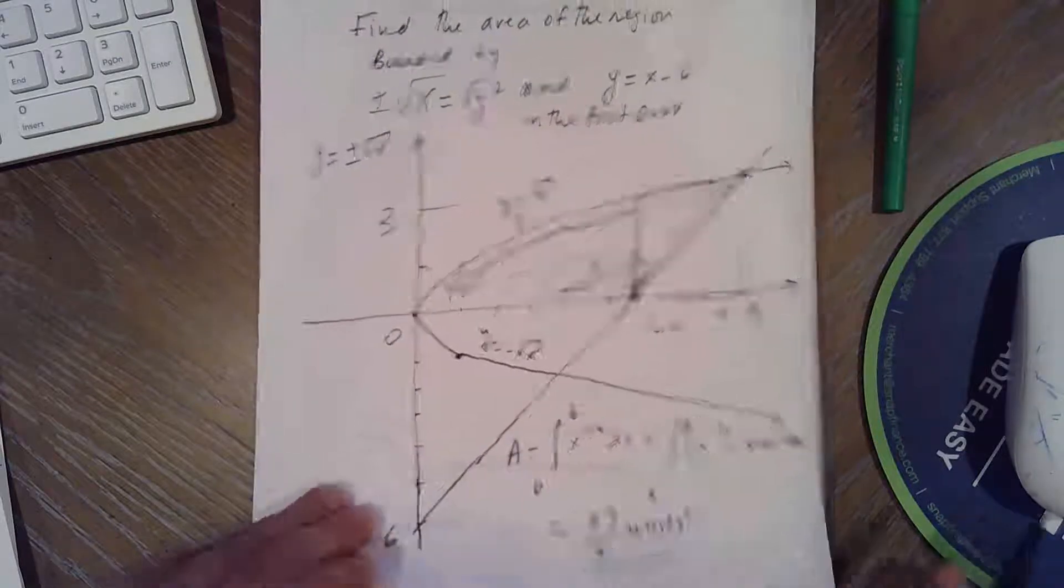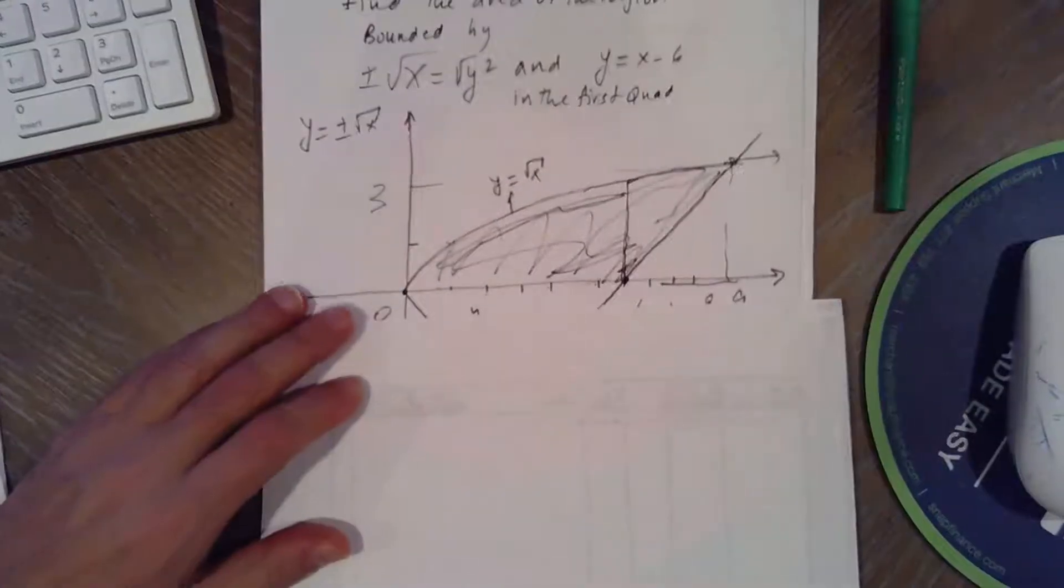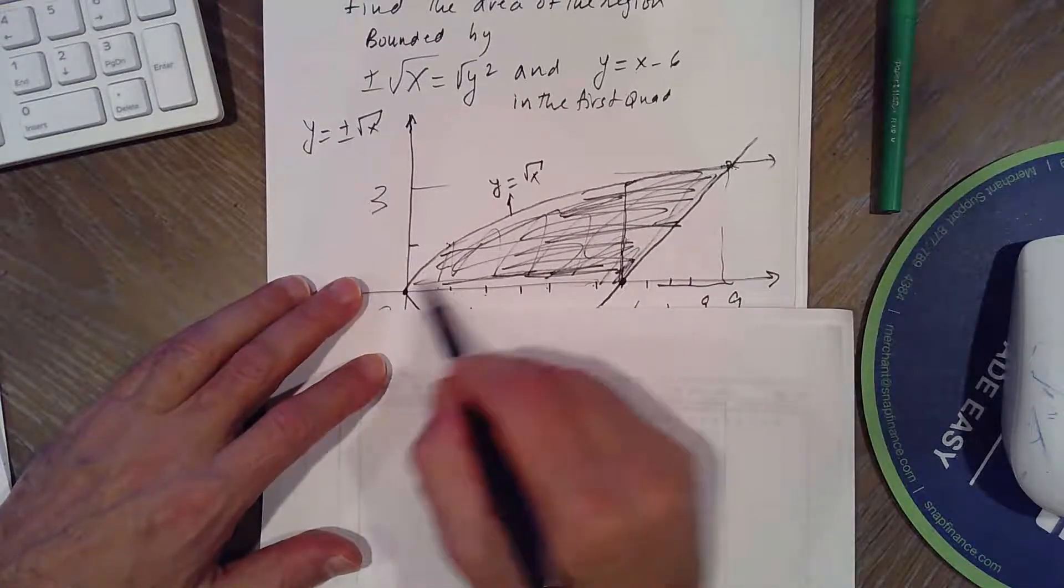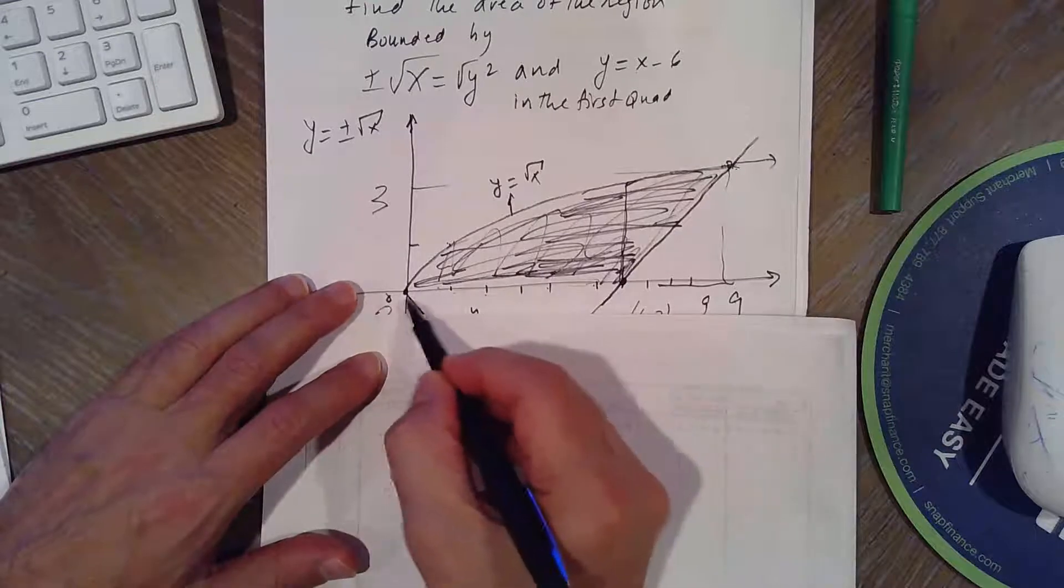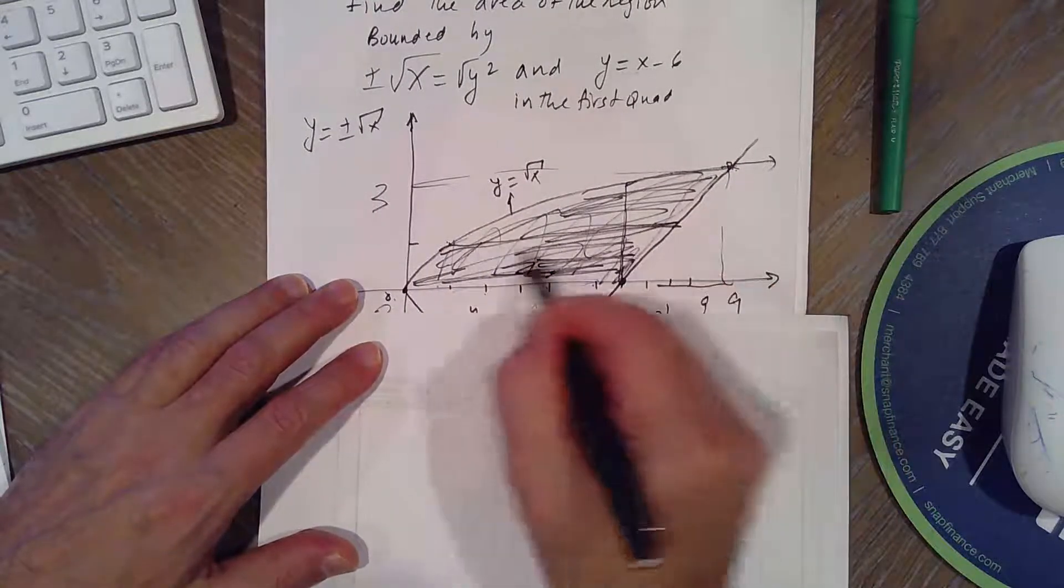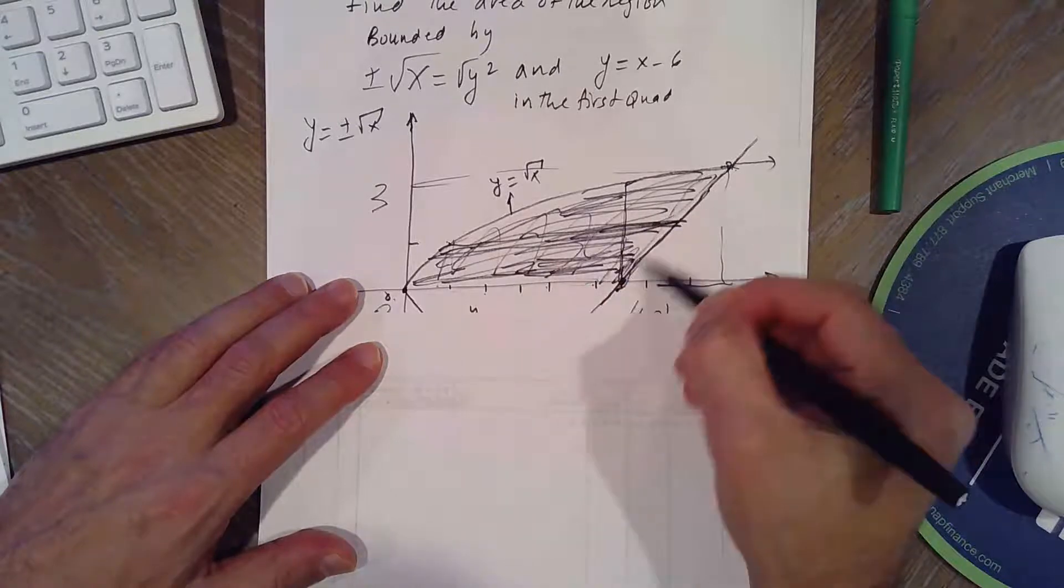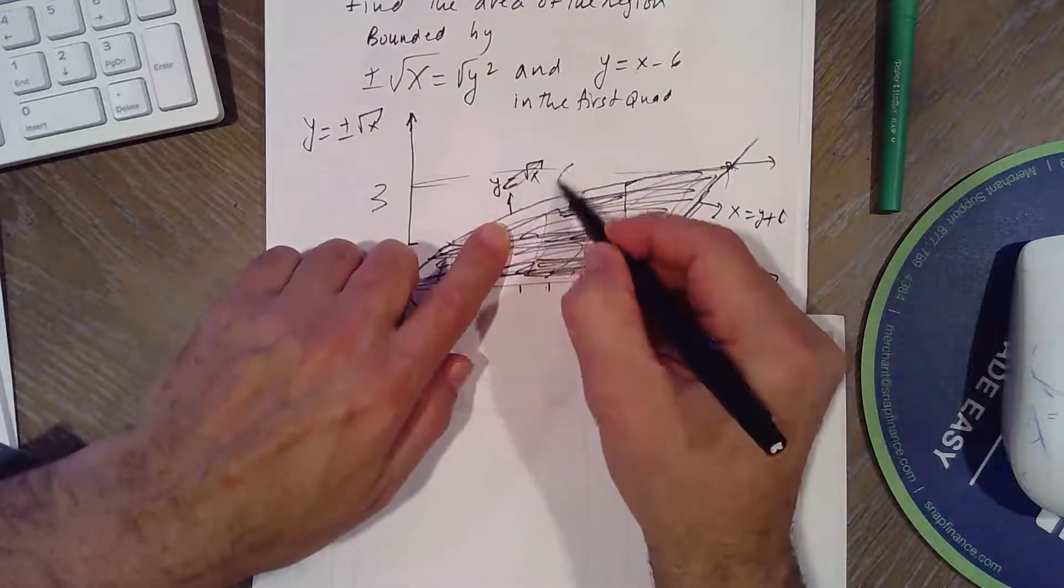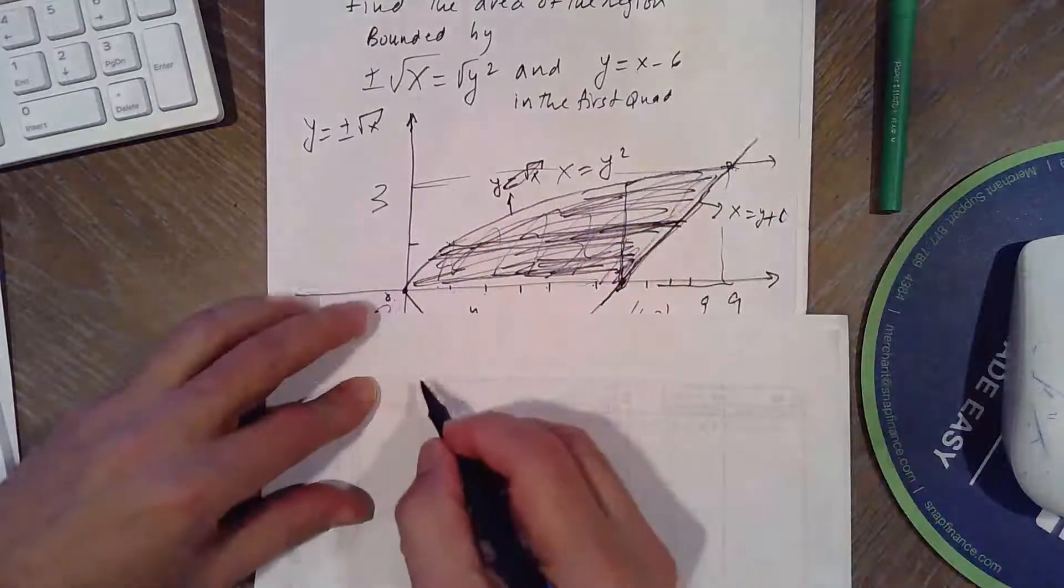So we have to split it up. But if you do sideways, if you do sideways, with respect to Y, the smallest Y value is 0, the highest Y value is 3. And then it will be right minus left, right, which is X equals Y plus 6, and left is X equals Y squared. So it will be easier.